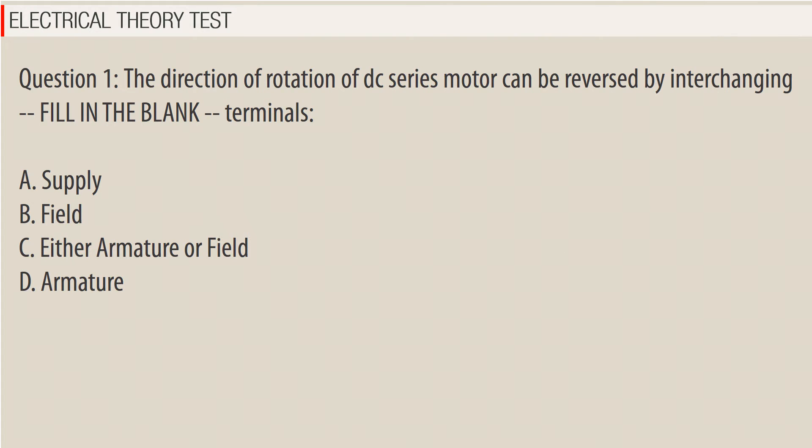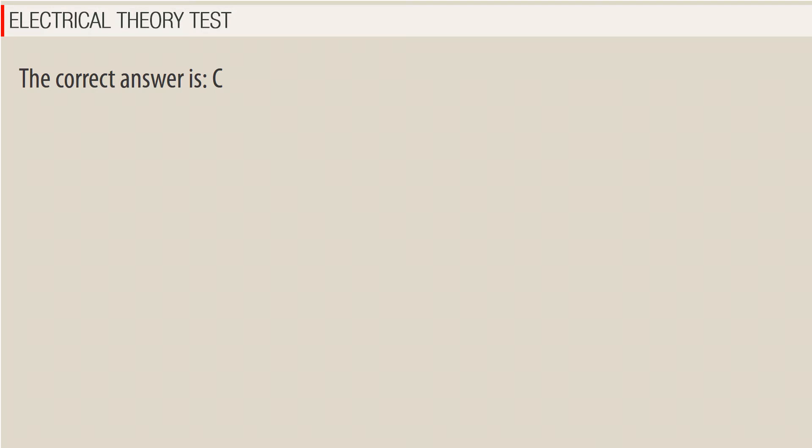Question 1: The direction of rotation of a DC series motor can be reversed by interchanging — fill in the blank — terminals. A. Supply, B. Field, C. Either armature or field, D. Armature. The correct answer is C.